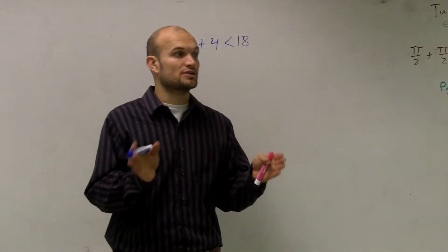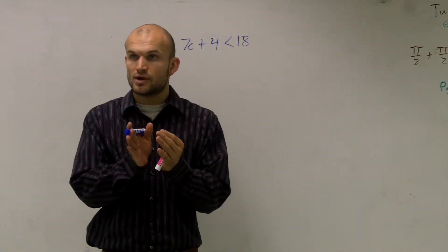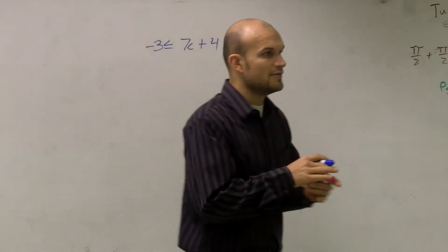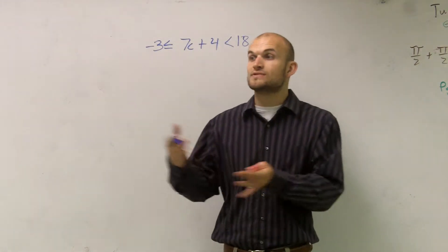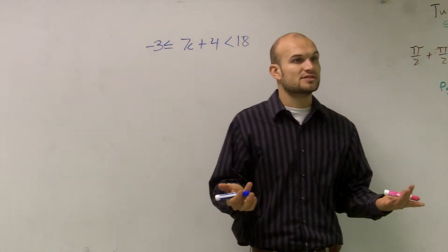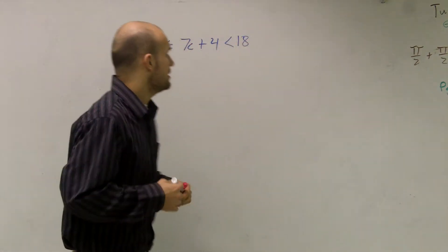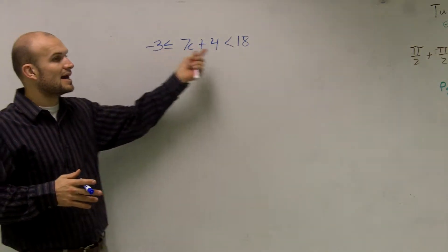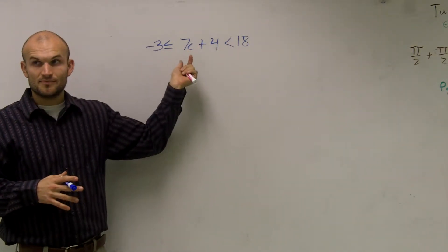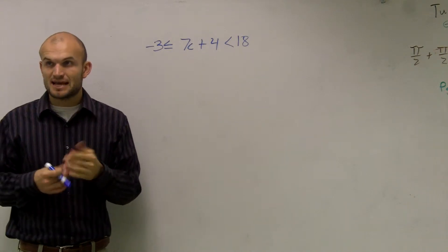Remember, the 'and' was where the two inequalities intersected. And the 'or' was where it was either one inequality or the other inequality. Sometimes they would intersect and sometimes they wouldn't. Now, when you have an inequality written in this format, whenever the signs are going in the same direction, it's going to be an 'and' statement.